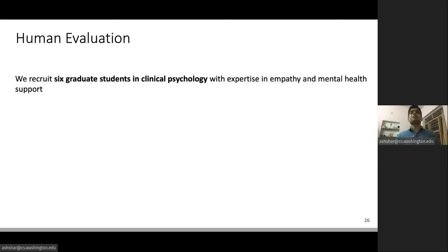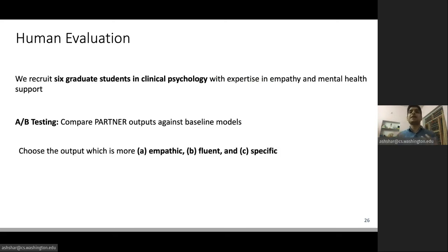Now, automatic metrics on these tasks can often be very noisy. Therefore, we also perform human evaluation. For this, we recruit six graduate students in clinical psychology. Most of these participants were PhD students in second or subsequent years of their degree program. According to our clinical psychology collaborators, they had significant expertise in empathy and mental health support. For our human evaluation, we do AB testing. We show our participants an output from a model and a corresponding output from a baseline, and we ask them to choose the output which is more empathic, fluent, and specific.